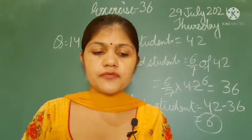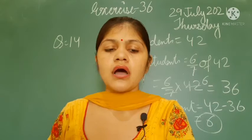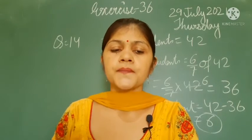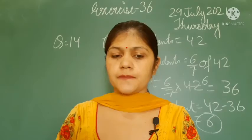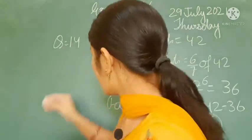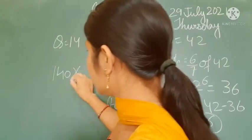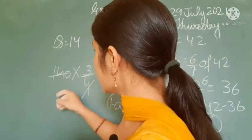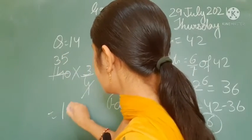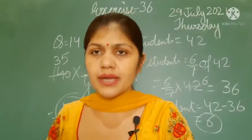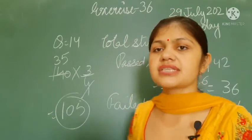Question number 15: There are 140 members of a committee. In a meeting, 3 fourths of the members were present. How many were absent? We calculate 3 by 4 of 140: 4 threes are 12 and 4 fives are 20 — so 105 members were present. Absent = 140 − 105 = 35 members were absent.